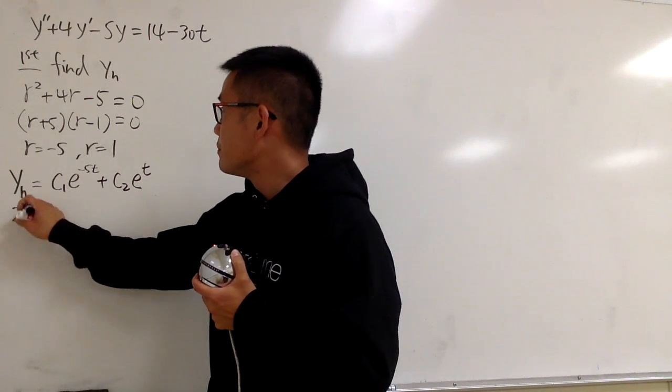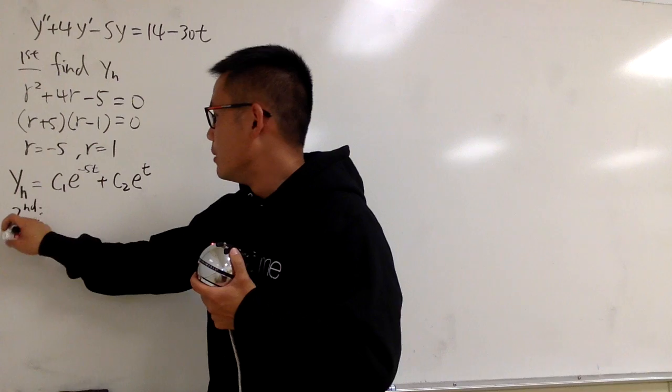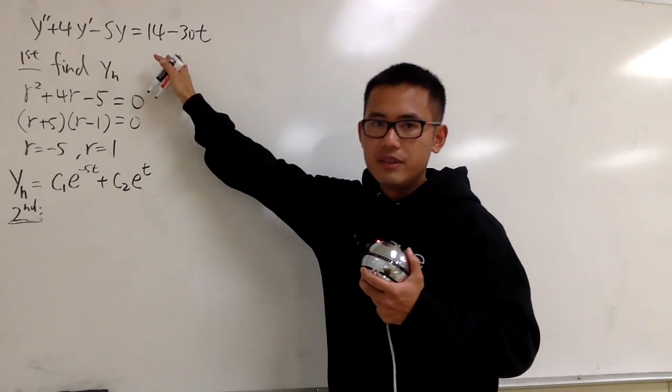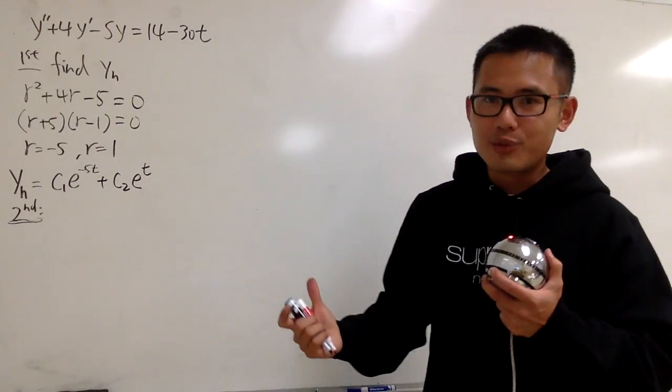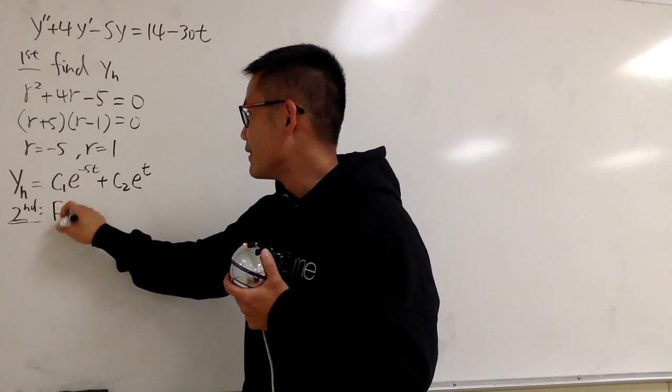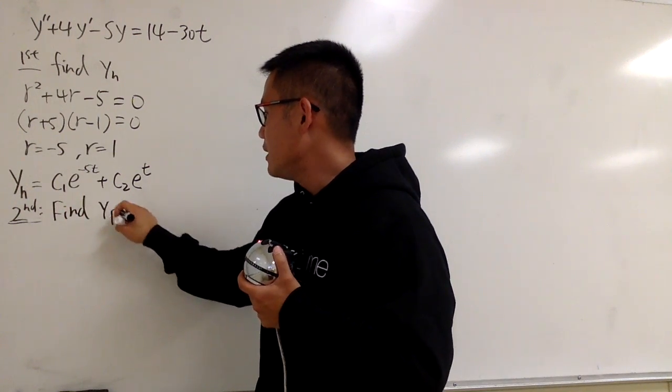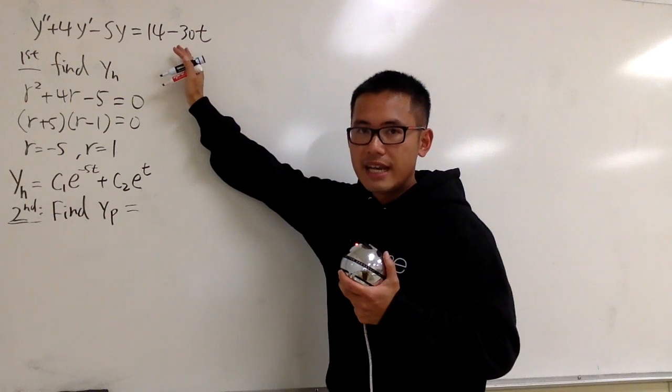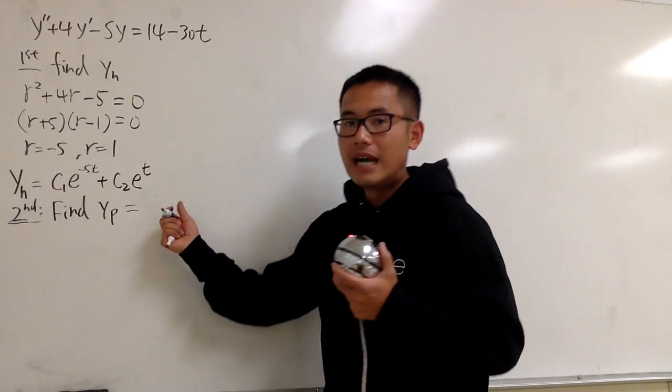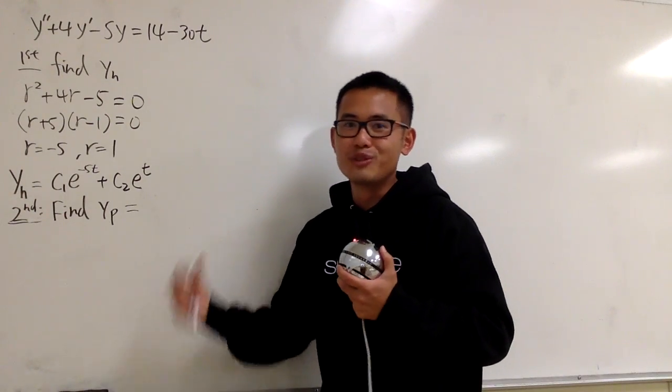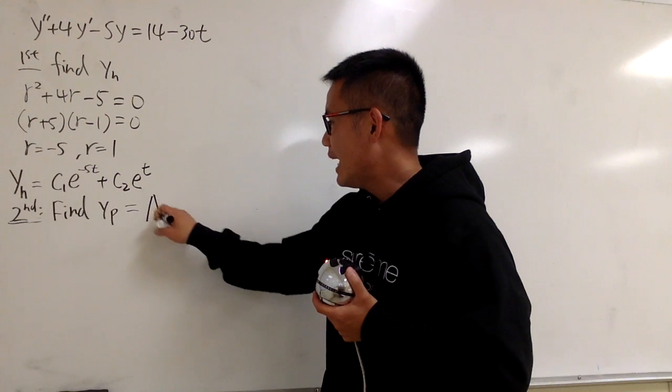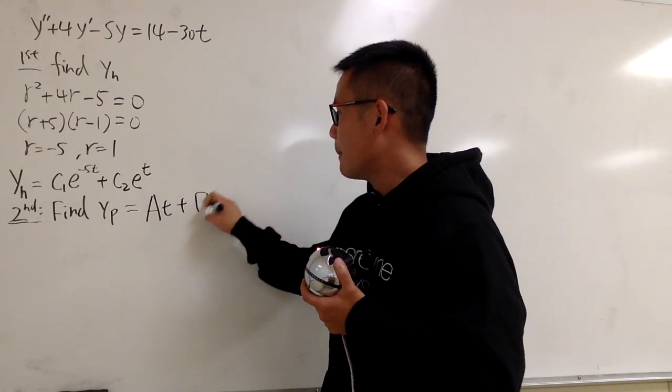And next, step two, because this is not a homogeneous situation, the right-hand side will have this. And the good thing is that this is just a linear function. Step two is to find yp. And in this case, look at the right-hand side. This is just, once again, a linear equation. So, what I need to do is, I have to set up, this is the trial solution for it, just a linear one as well. I will just need to have At plus B.